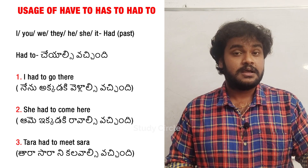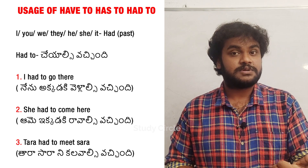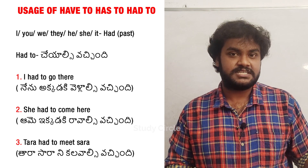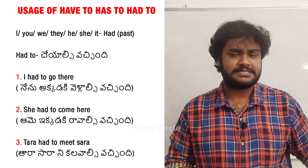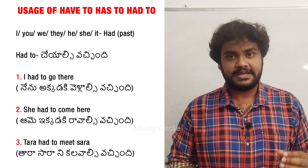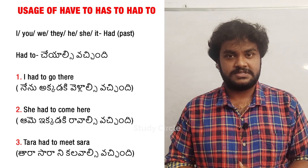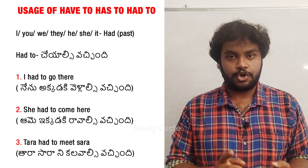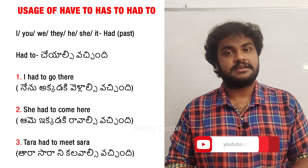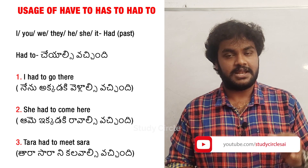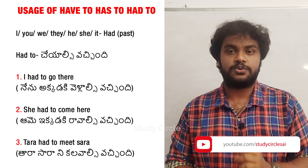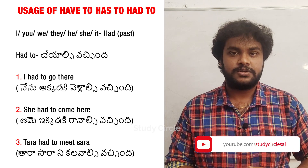From here, have to and has to are used for present tense, meaning something ongoing or required now. But for past tense, had to is used — for every subject: I, you, we, they, he, she, it — everything uses had to.